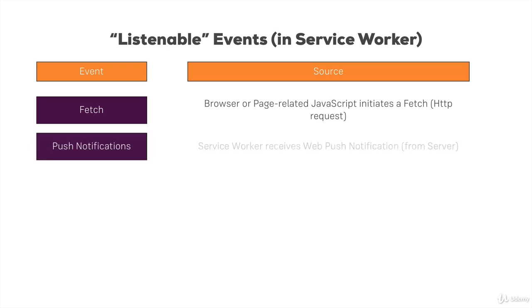Another cool event is push notifications. These are sent from another server. Basically, every browser vendor — like Google for Chrome and Mozilla for Firefox — has its own web push server. You can send push notifications to these servers from your own server, and then these vendor servers will send the push notification to your client application. In the service worker, you can listen for such a push event — an incoming push request.